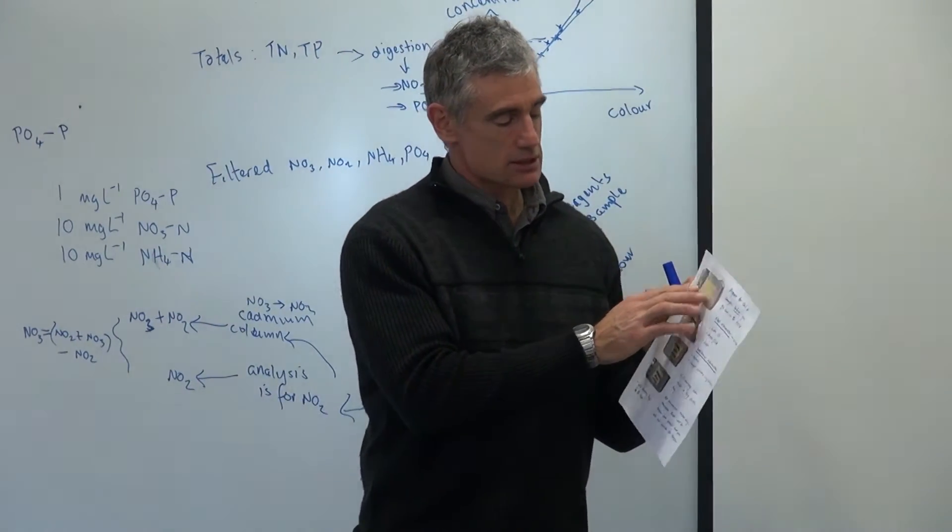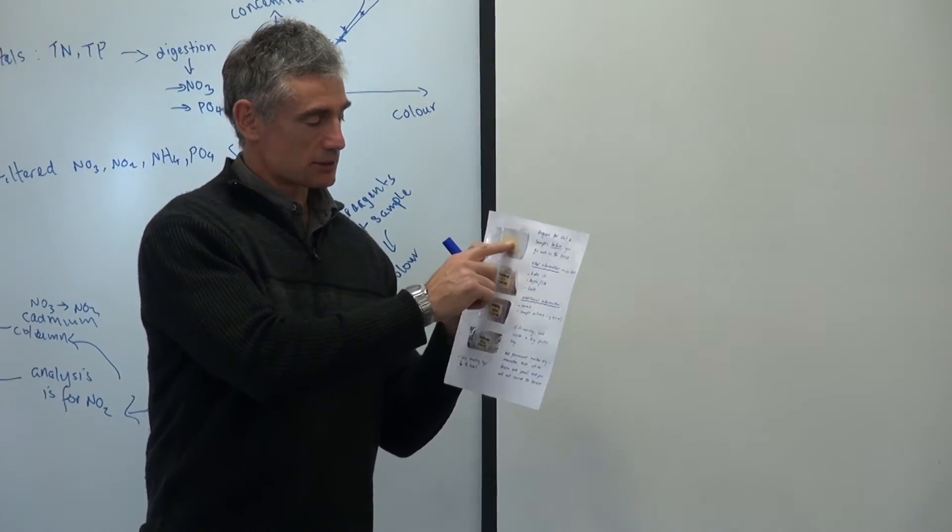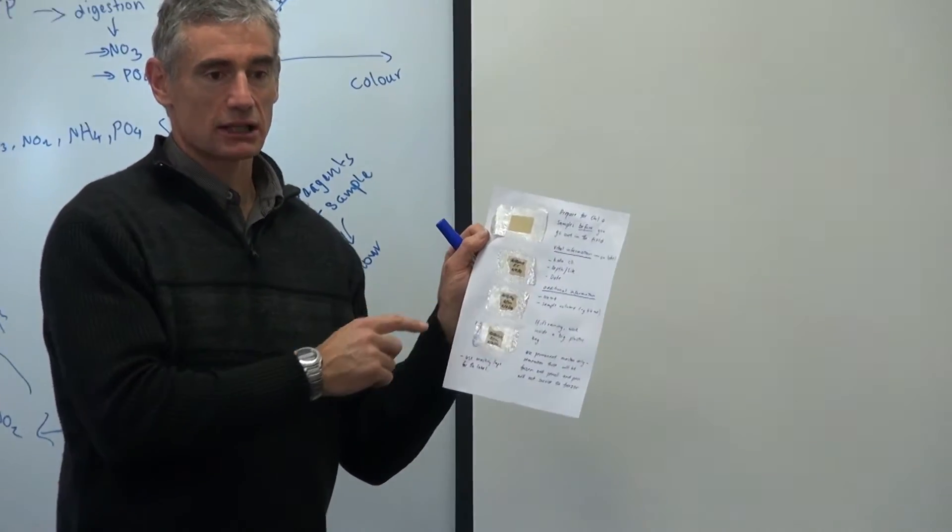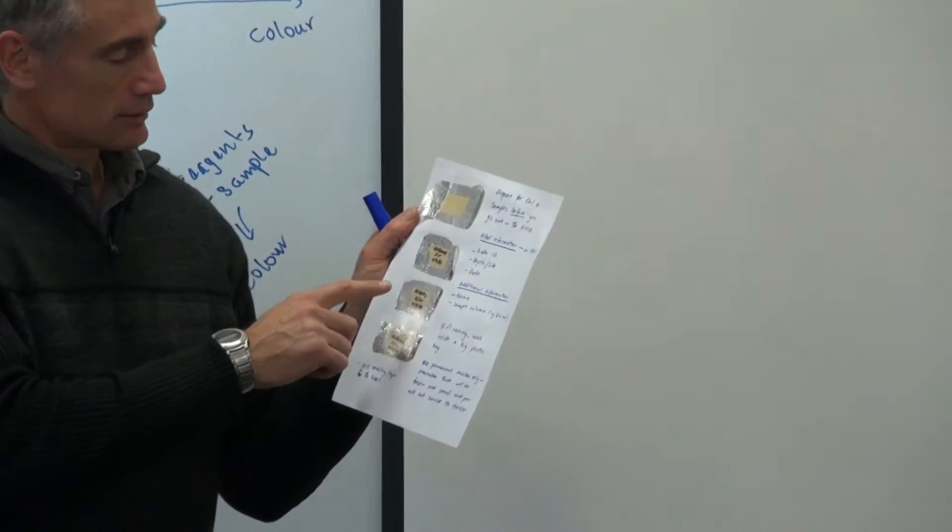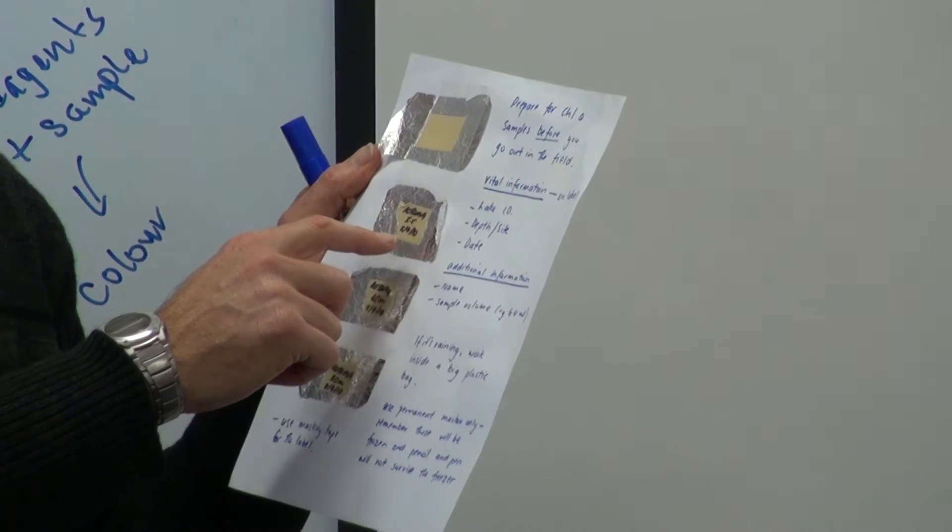It's then put into this. In an ideal case, Louise has put masking tape here on that, and it identifies the lake, depth, site.